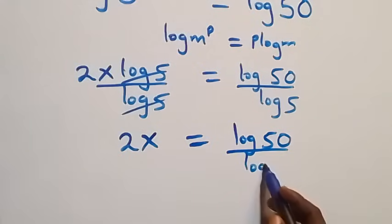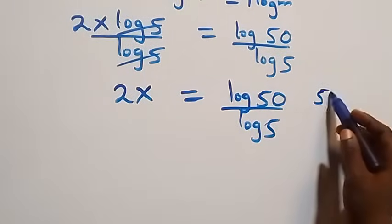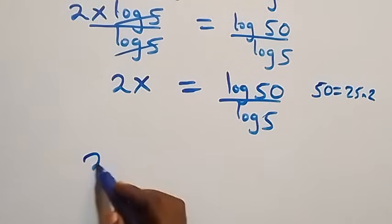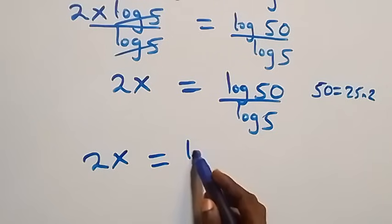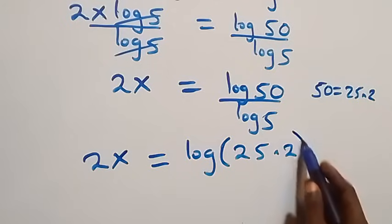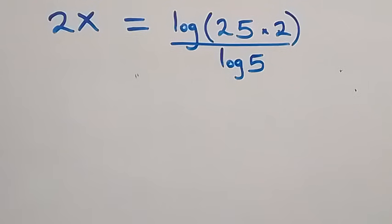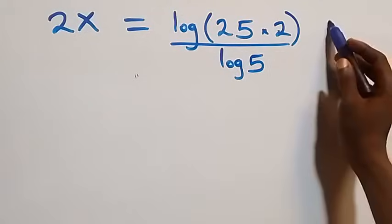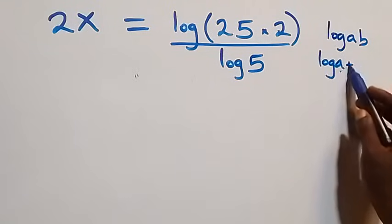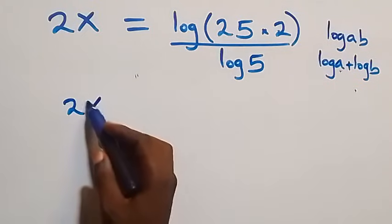The next step: we can express 50 as 25 times 2, so what we have becomes 2x equals log of 25 times 2, over log 5. This follows the law of logarithms: log a times b can be written as log a plus log b. So what we have becomes 2x equals log 25 plus log 2, all over log 5.